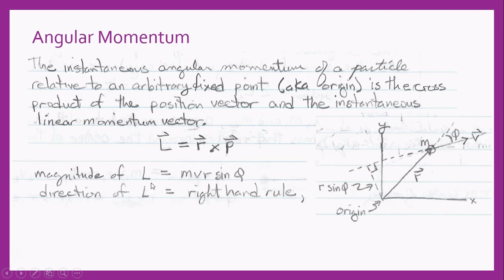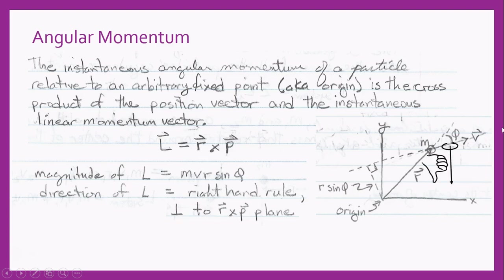The magnitude of the angular momentum is the particle's mass times the magnitude of its velocity times the magnitude of its position times sine of phi, where phi is the angle between the position vector and the velocity or momentum vector. The direction of angular momentum is determined by the right-hand rule, and it will be perpendicular to the position-momentum plane. Here we can see a review of the right-hand rule.